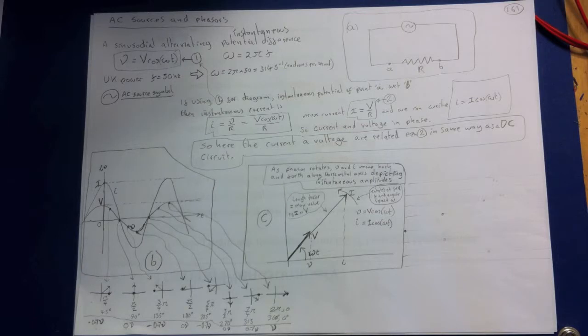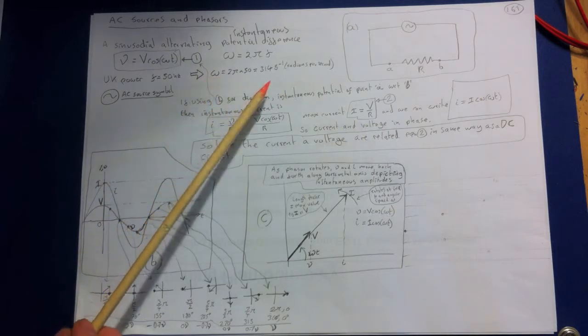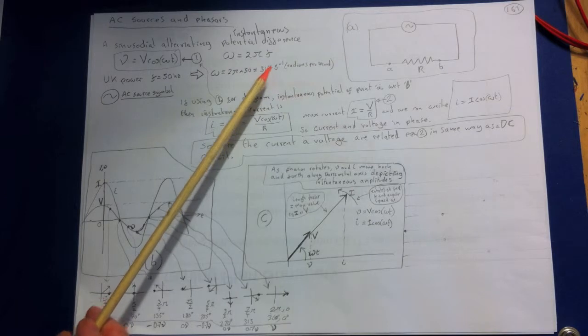In the UK commercial electric power distribution systems always use a frequency of f equals 50 hertz corresponding to the angular frequency of 2 pi times 50 which is 314 radians per second.